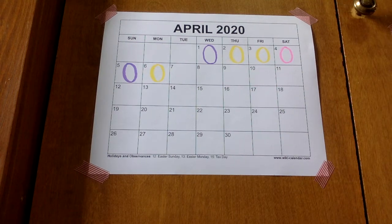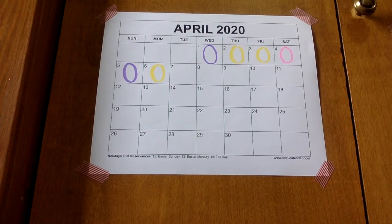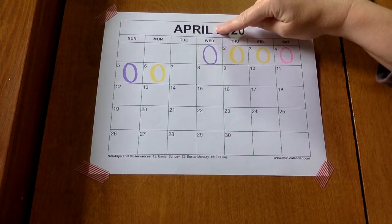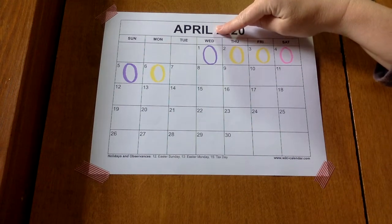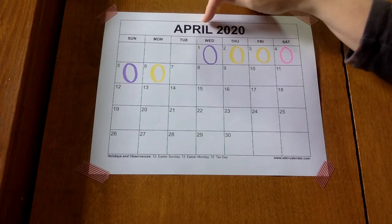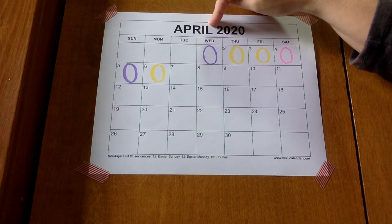Good morning, kindergarten. We're back for calendar time. It is April. What month? Yes, April. Spell April for me. Yes, April.